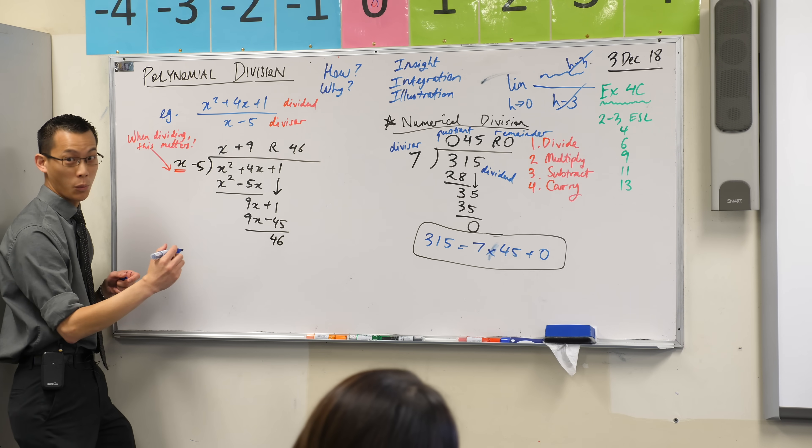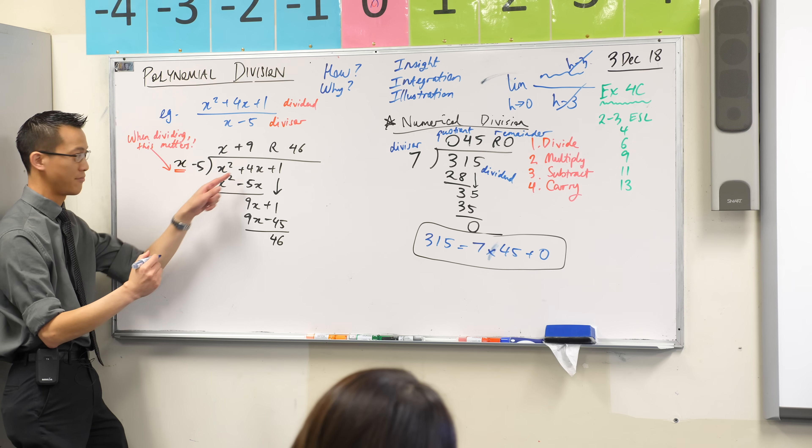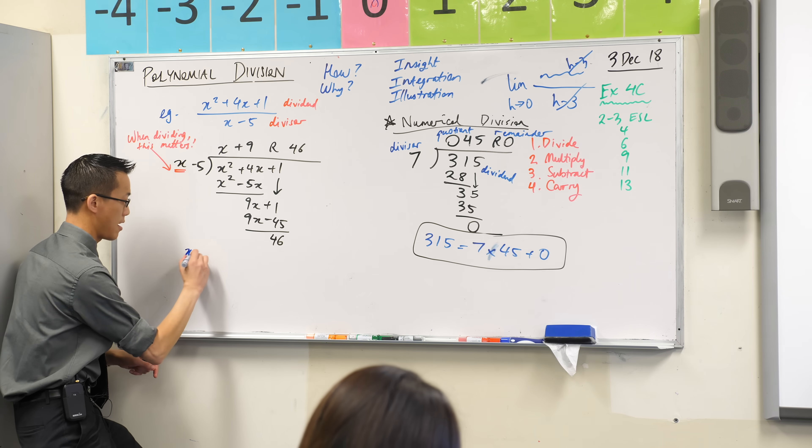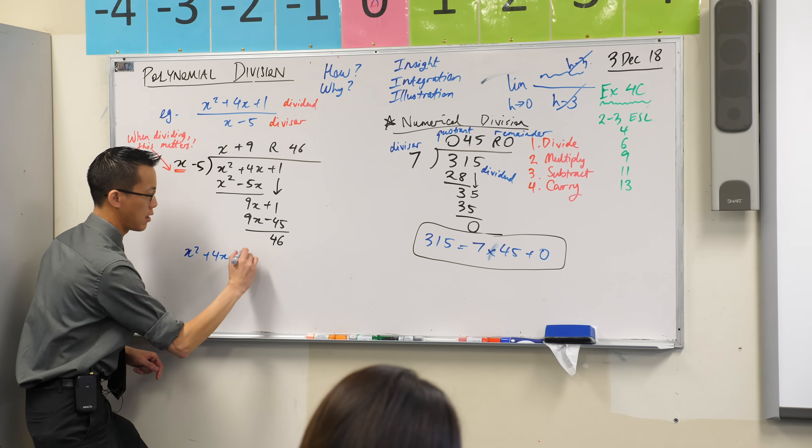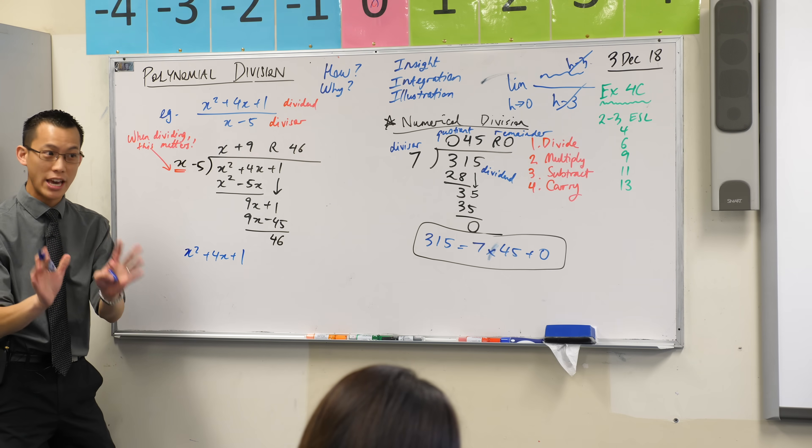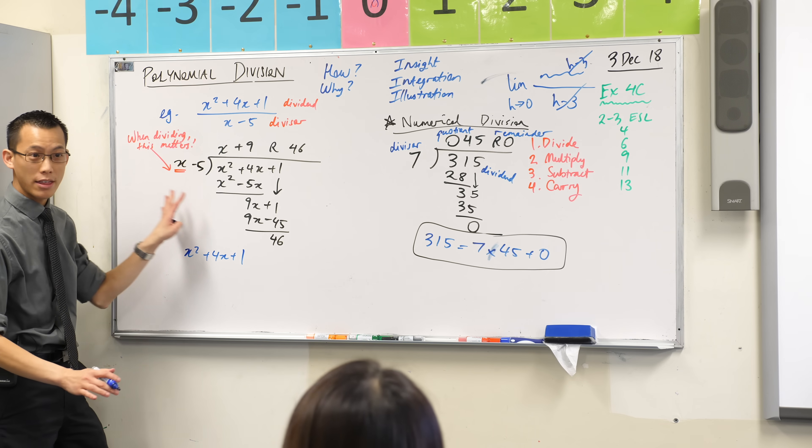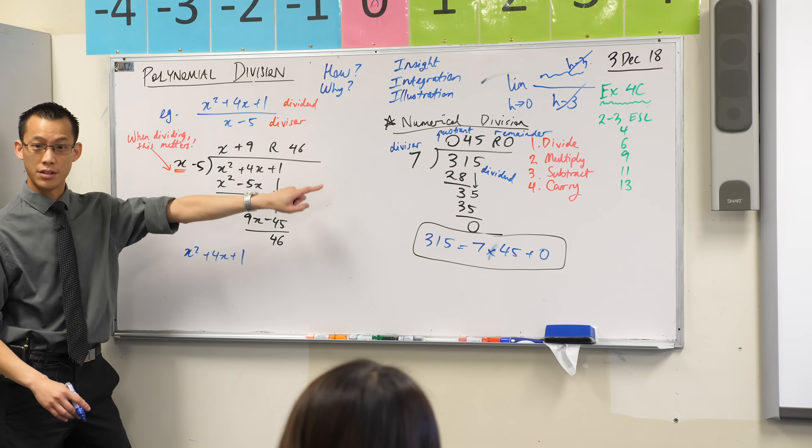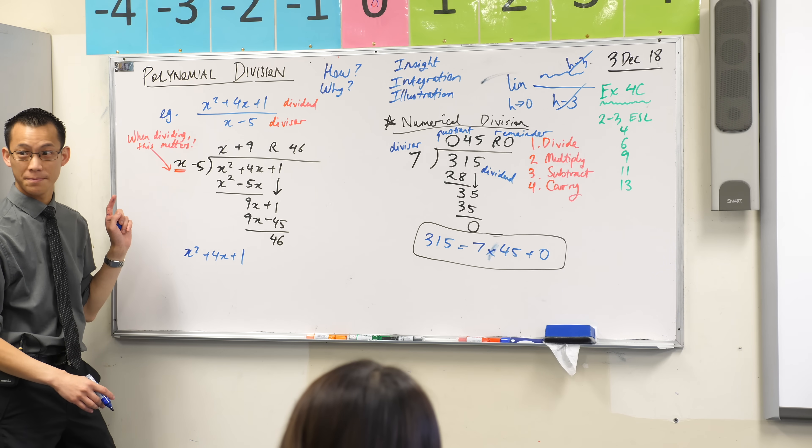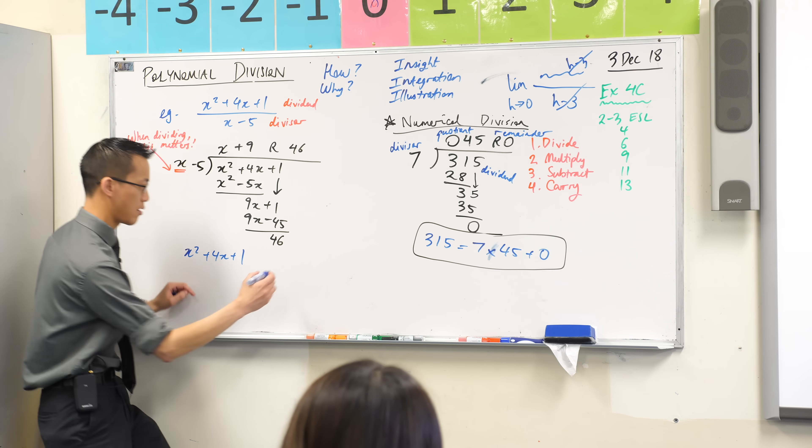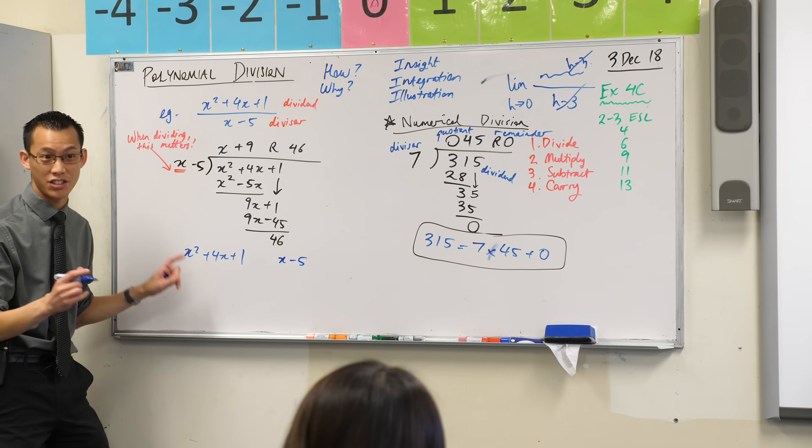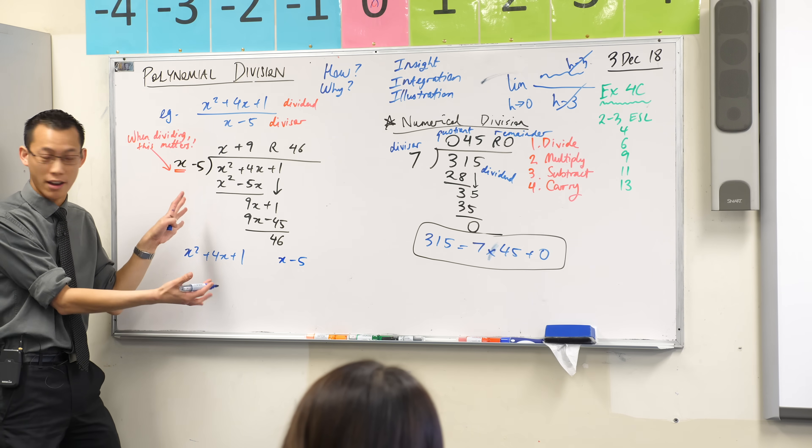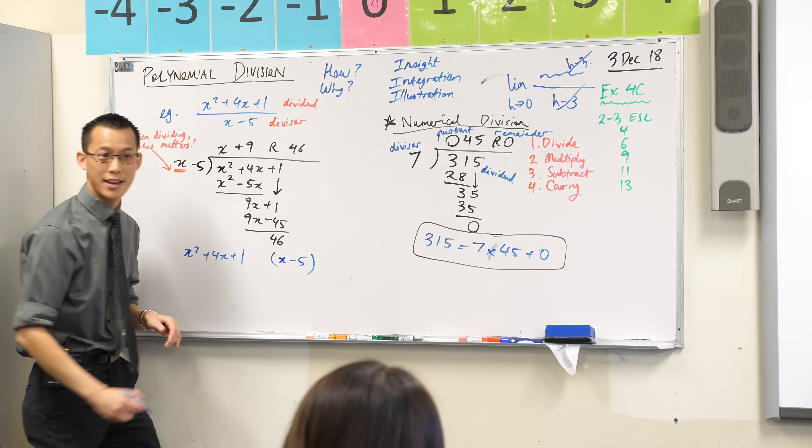The dividend was, what did we start with? The big guy here, right? x squared plus 4x plus 1. I'm suggesting that going all the way through this, I should be able to say it's equal to the divisor. Which piece is the divisor? x minus 5, what I started with. x minus 5. You'll notice I'm not writing an equal sign just yet because I'm not sure. I want to check, right?